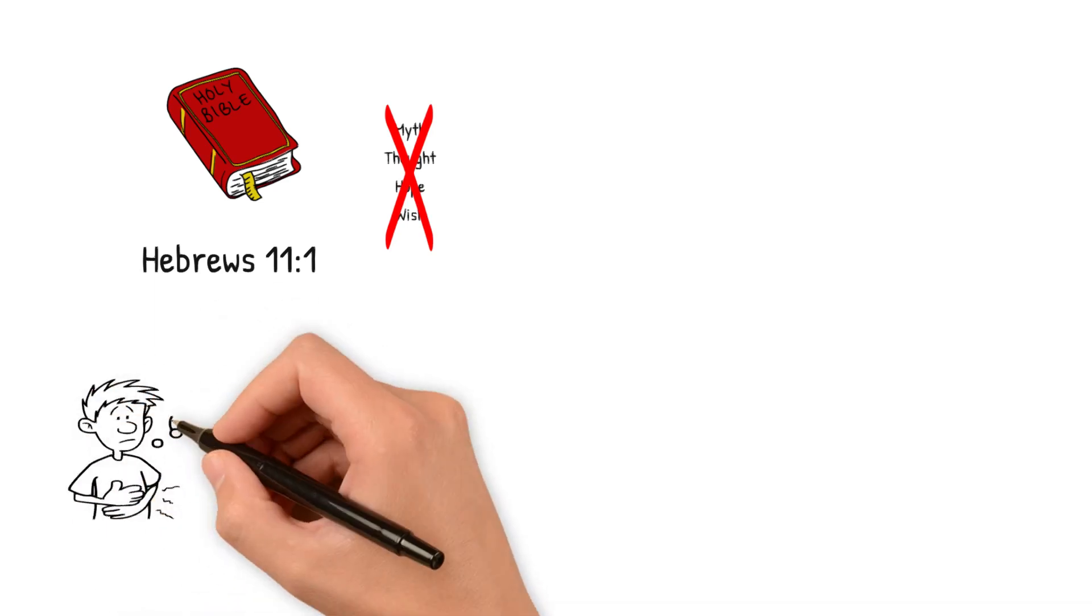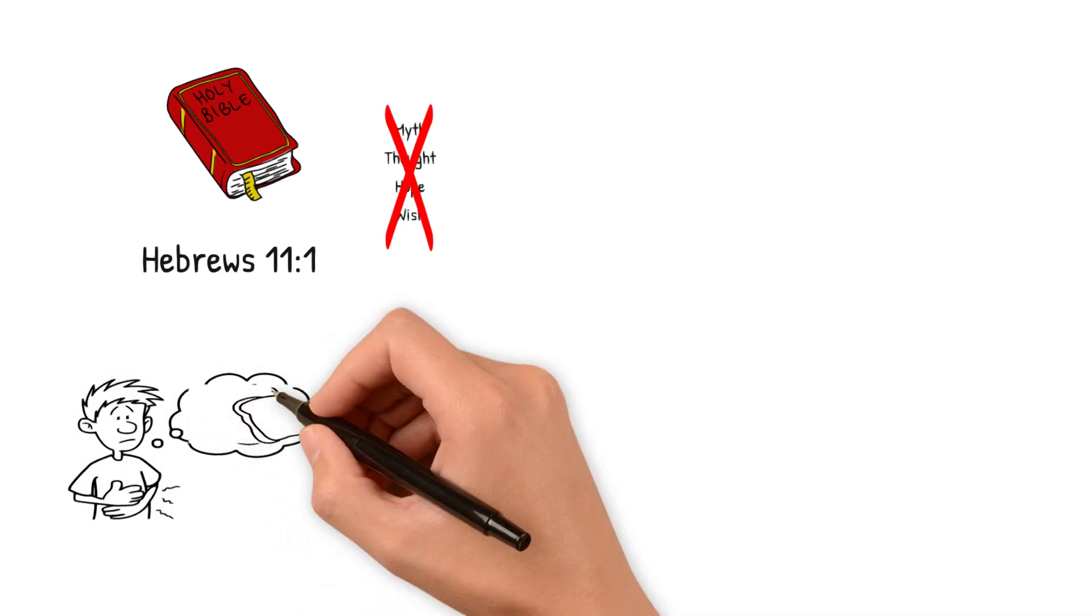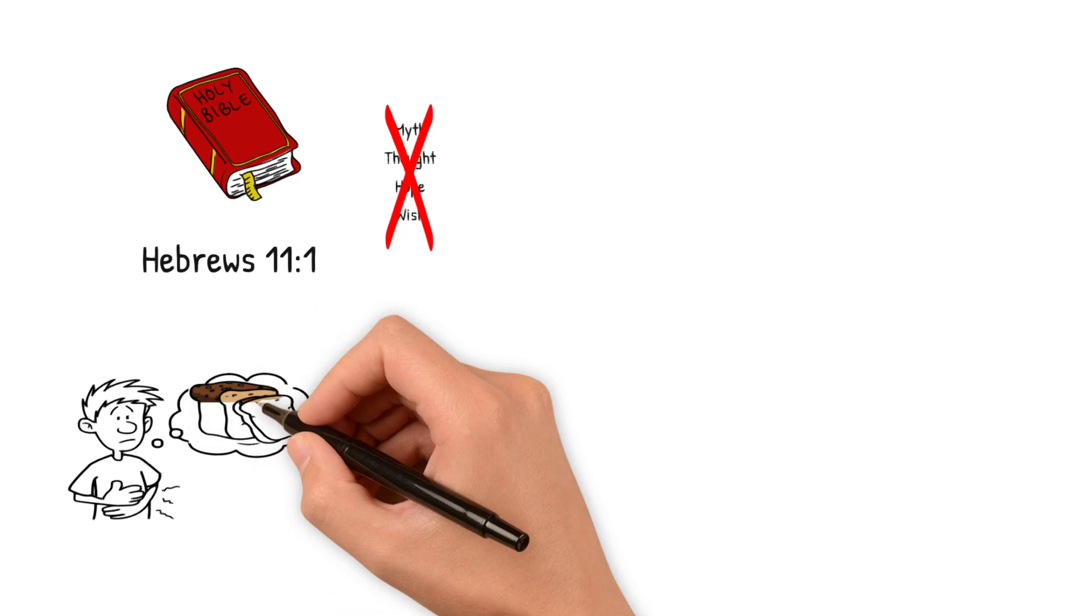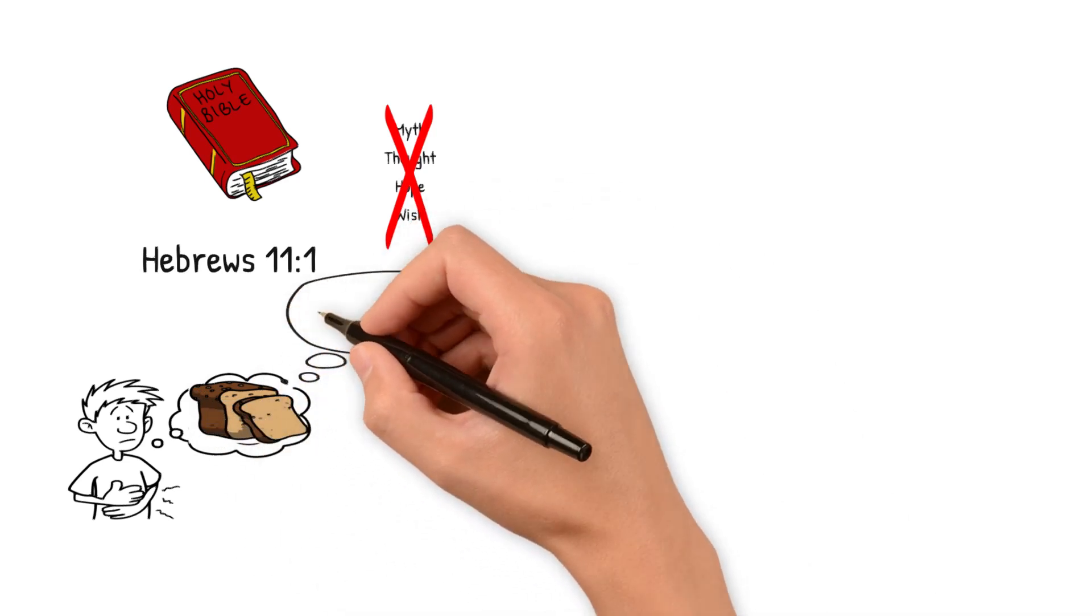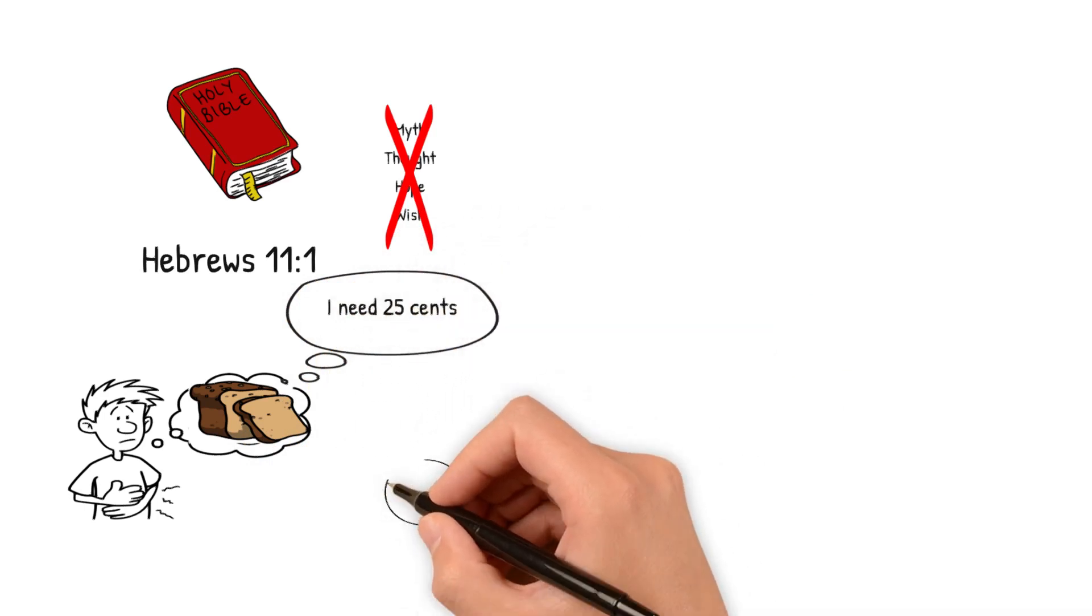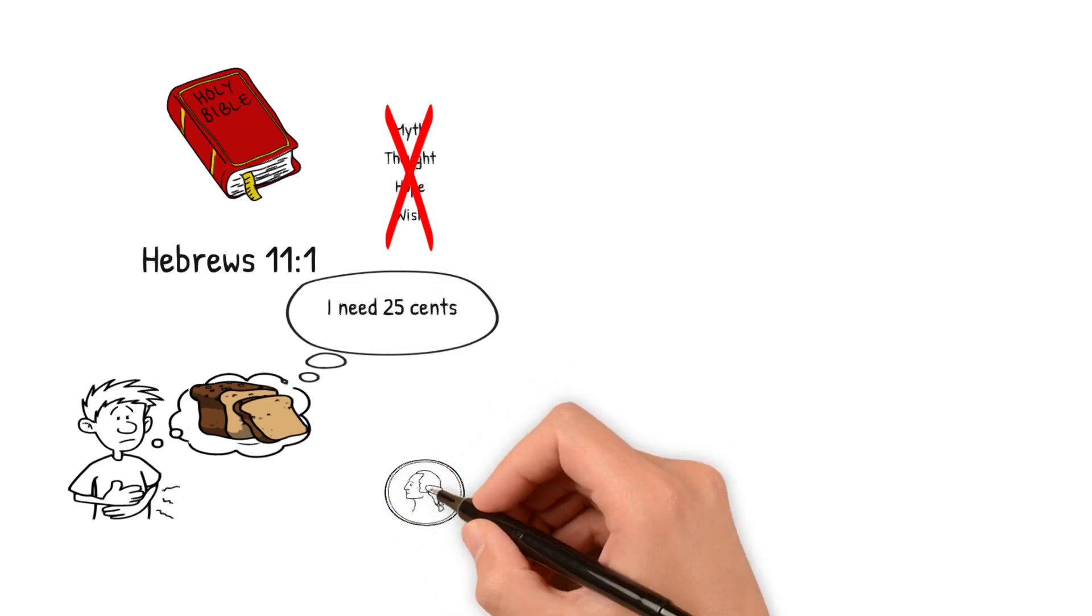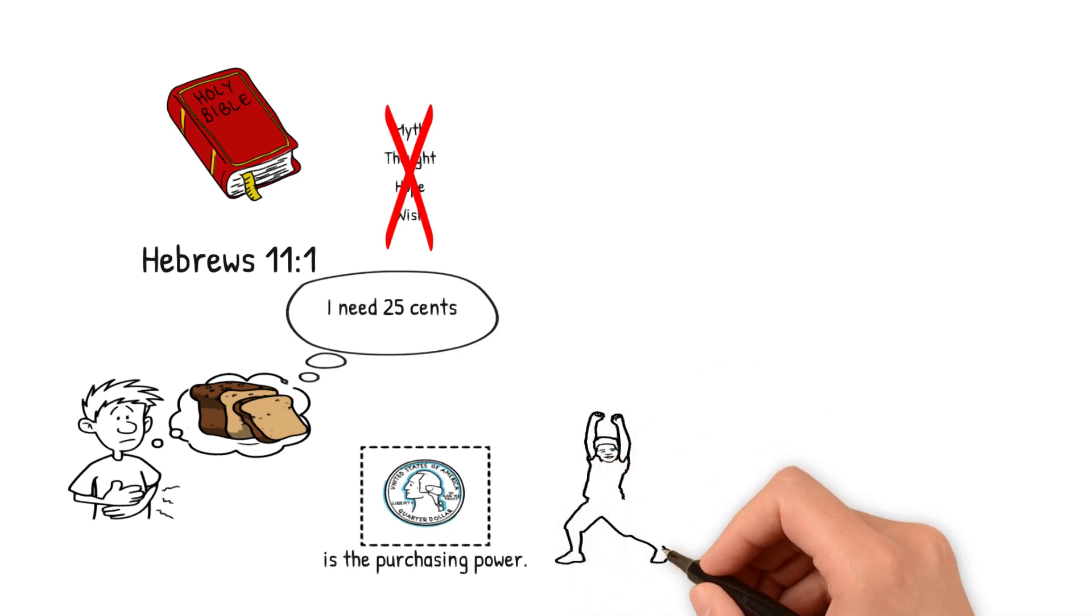For instance, I come to you and I say to you, I am hungry. I have to have some bread. And you say, what do you need? What money do you need? I need 25 cents to buy a loaf of bread. I'm hungry. And you say, here is the 25 cents. Now 25 cents is the purchase power of the loaf of bread. And as long as I've got the 25 cents, I've got it. It's a substance.